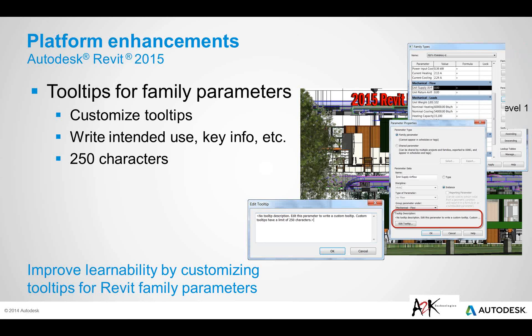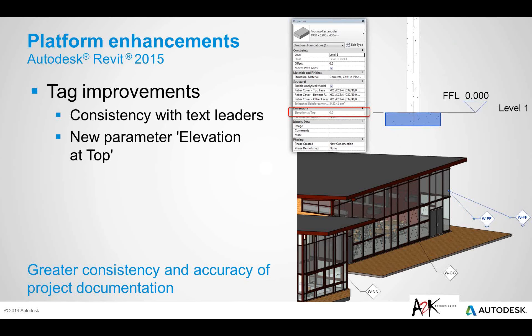Tag improvements are another handy feature. The main part of this feature is with regards to leader lines on tags — they have adjusted the way that they function so they are more in line with how the text leader lines work. This seems like a small change but it is a bit of a major feature in terms of reducing frustration and time spent mucking around with documenting and moving tags around.